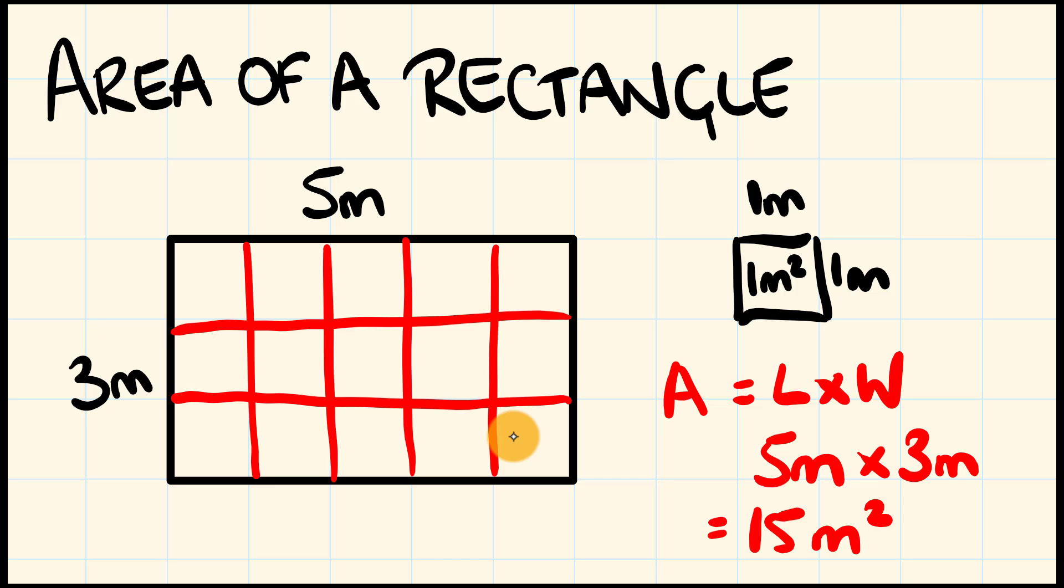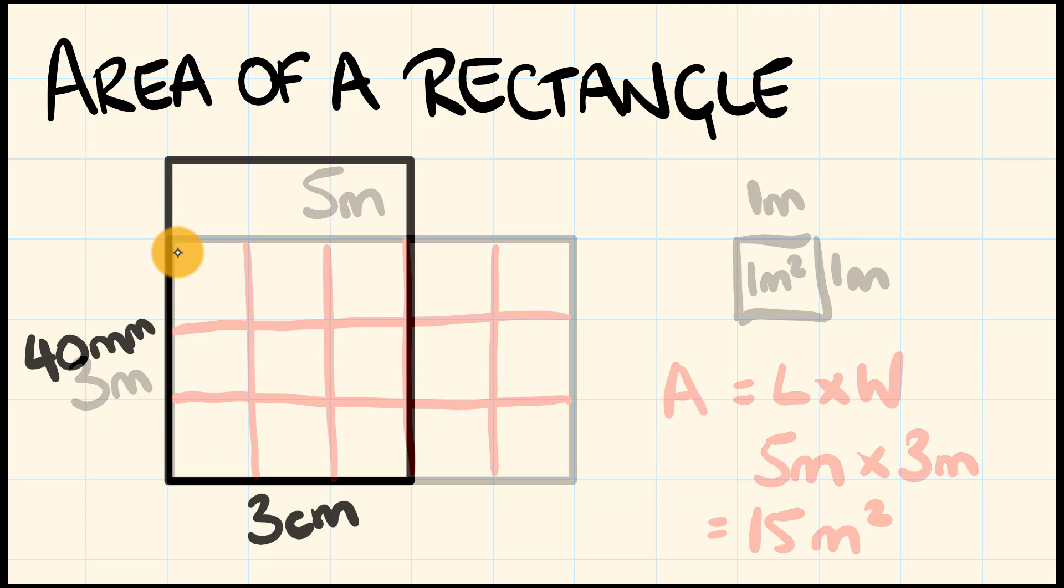It's pretty simple, right? You want to work out the area of a rectangle, just multiply the length by the width. There's just one thing to watch out for. I'll show you in this example right here.